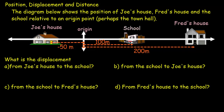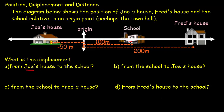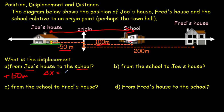In this example we have a one-dimensional situation — you're asked to determine certain displacements. From Joe's house to the school, that would be 50 plus 100, which is 150 meters to the right, or plus 150 meters. More mathematically, displacement delta x equals the final position minus the initial position: plus 100 minus negative 50 gives us a result of plus 150 meters.